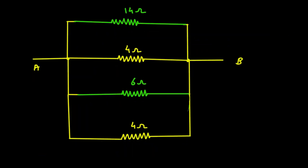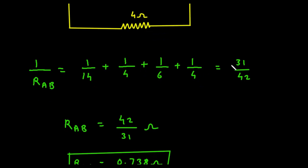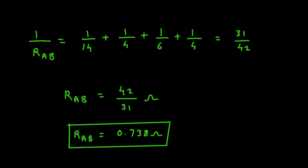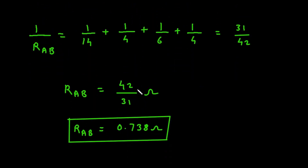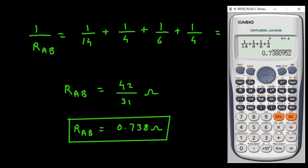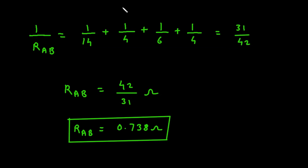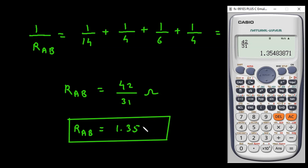All of them are connected in parallel, and solving gives 31 divided by 42. Taking the reciprocal, we get RAB equals 42 divided by 31. We did a small mistake earlier — we have to take 42 divided by 31, which is 1.35 ohm. So the final correct answer is 1.35 ohm. This is how we can solve these types of networks.